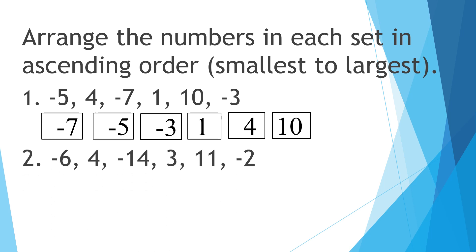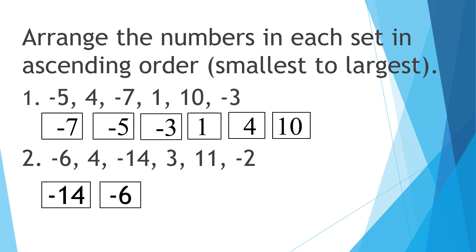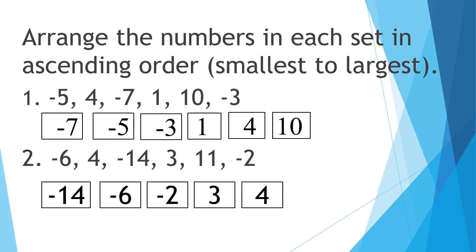Number two: negative six, positive four, negative fourteen, positive three, positive eleven, and negative two. The smallest number is negative fourteen, then negative six, negative two, positive three, positive four, and positive eleven — the largest number.